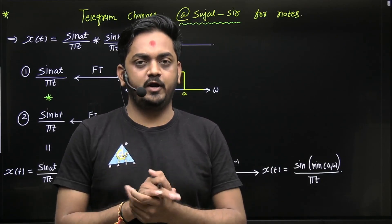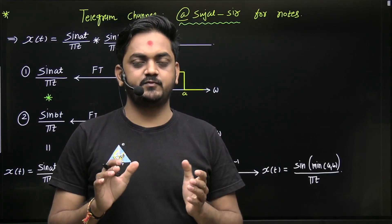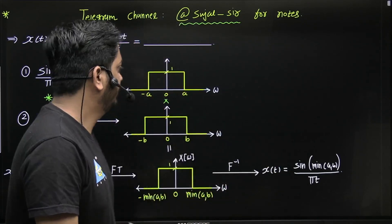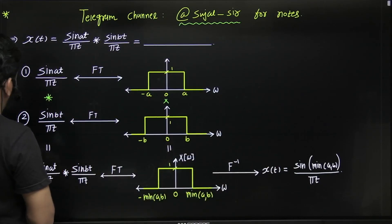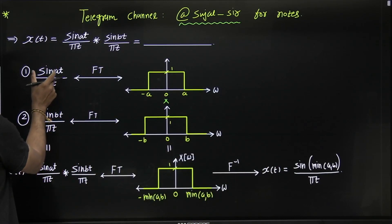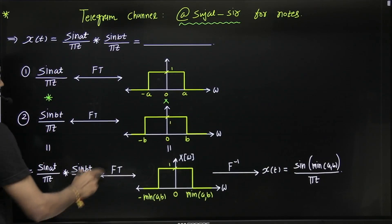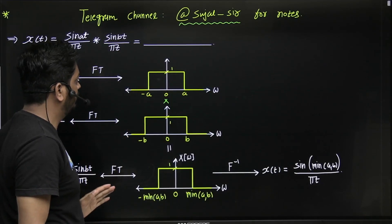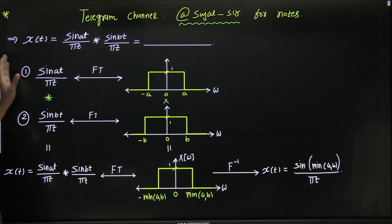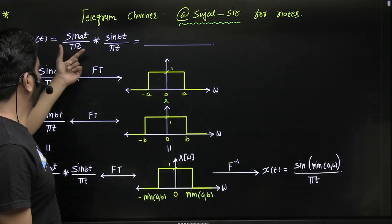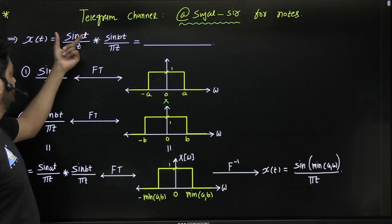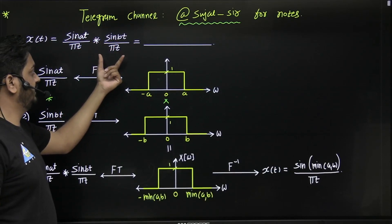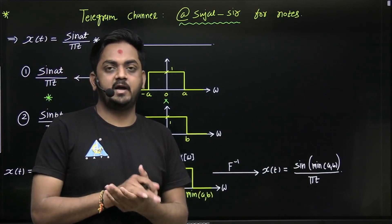Hello dear students, welcome to Gate Academy. In this video I will tell you some important concepts of Fourier transform. In the previous class we have seen that sinc function sin(at)/πt is a rectangle function from minus a to a with amplitude 1. Now we want to perform convolution between two functions: sin(at)/πt and sin(bt)/πt, and also calculate the energy of x(t).